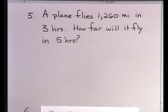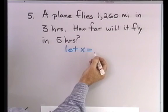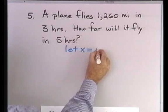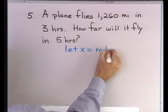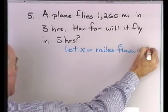Now, there's a lot of ways to solve this problem, but we're going to solve it using a proportion. So first, I'm going to say this. Let's let x equal the thing that's asked for in the problem, which is the number of miles it will fly in 5 hours. So miles flown in 5 hours.